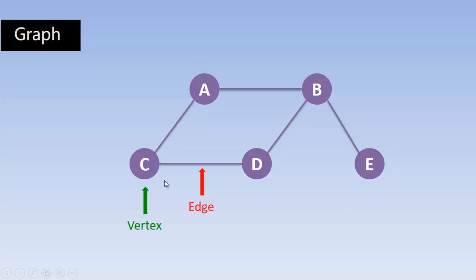The points or nodes are called vertices, or each point is called a vertex. Vertex or node. This is an edge or an arc.